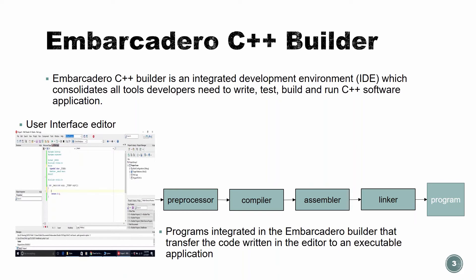The second step is the compiler. What the compiler does — and it invokes the other processes as well — is take our code written in C++ and turn it into machine code so the computer can run it. All of those processes happen via C++ Builder. We just do a build process, which I'm going to show in a few minutes, and everything happens automatically.